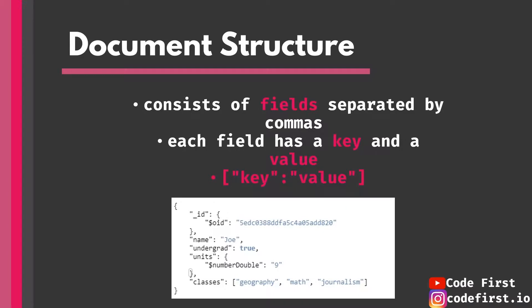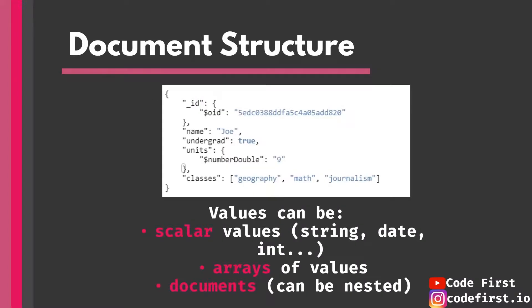So the document structure: a document in MongoDB consists of fields separated by commas. Each key-value pair is separated by a comma inside the same document, and each field has a key and a value. Values can be scalar values such as the name Joe — a string. They can be arrays of values such as geography, math, journalism. Or they can be nested documents, as you can see with the units or the ID field. You can go infinitely nesting, but that makes data searching more complex.